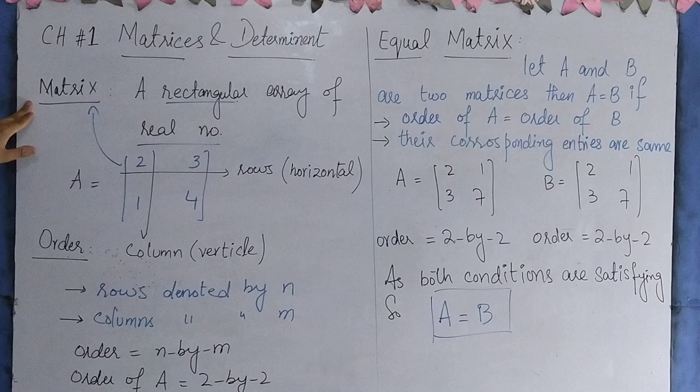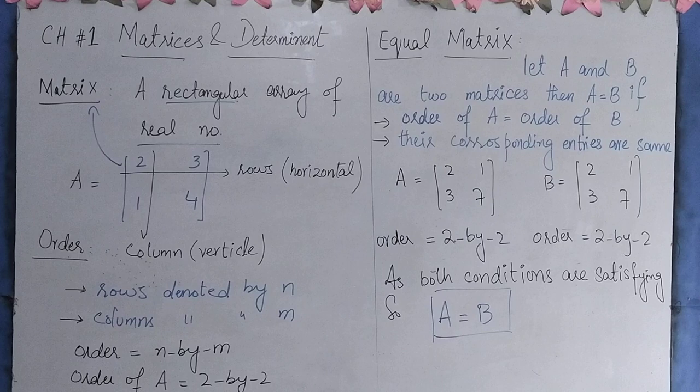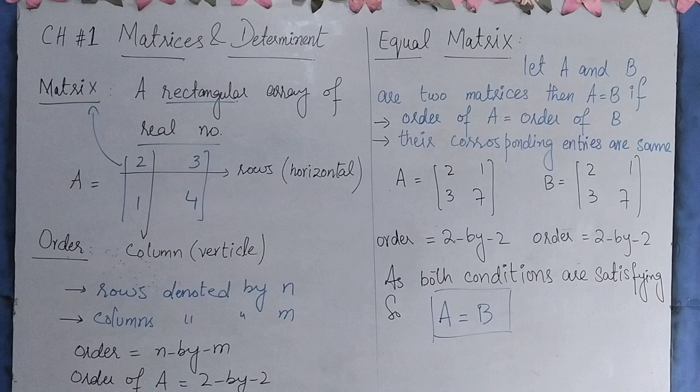The first thing we are going to take is what is called a matrix. If we define matrix, it is called a rectangular array of real numbers. This definition has two terms: first one is rectangular.